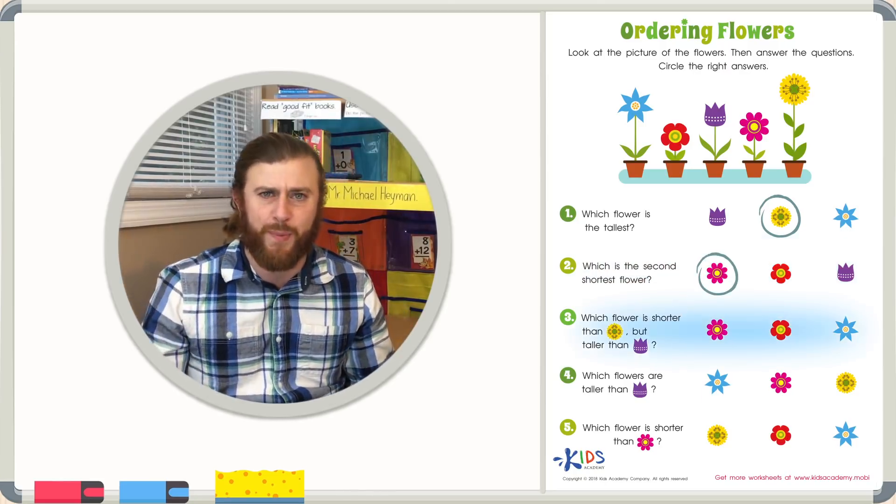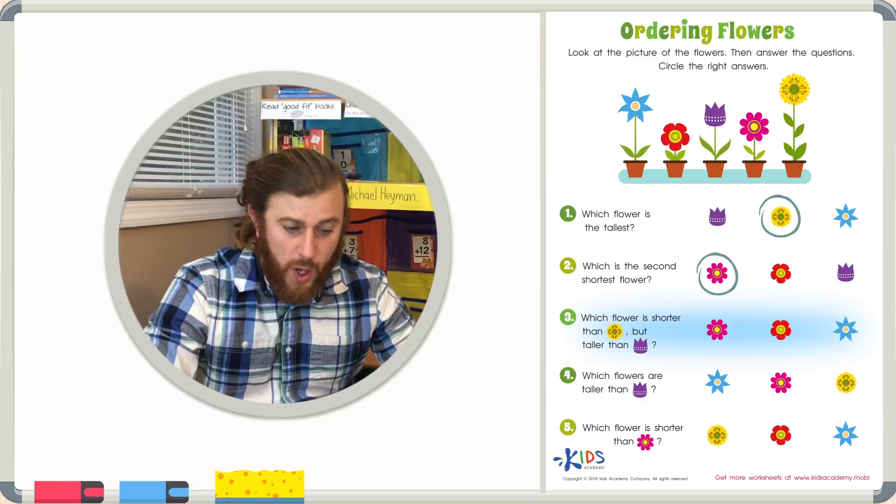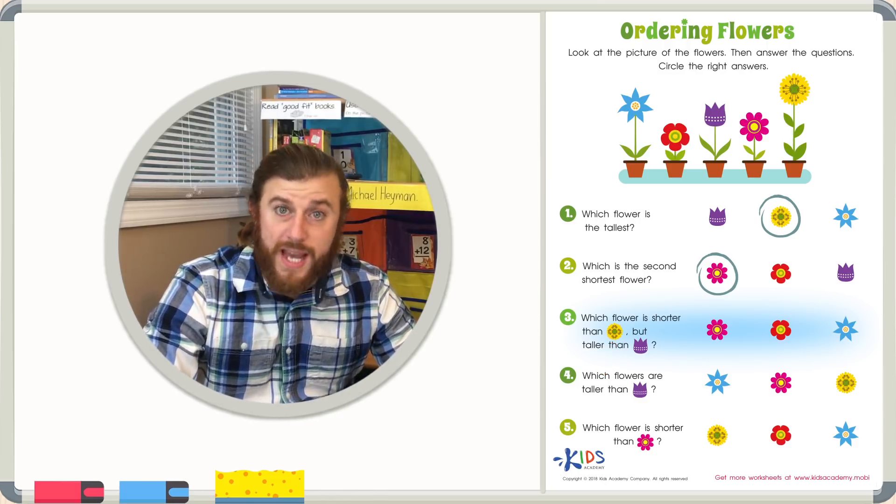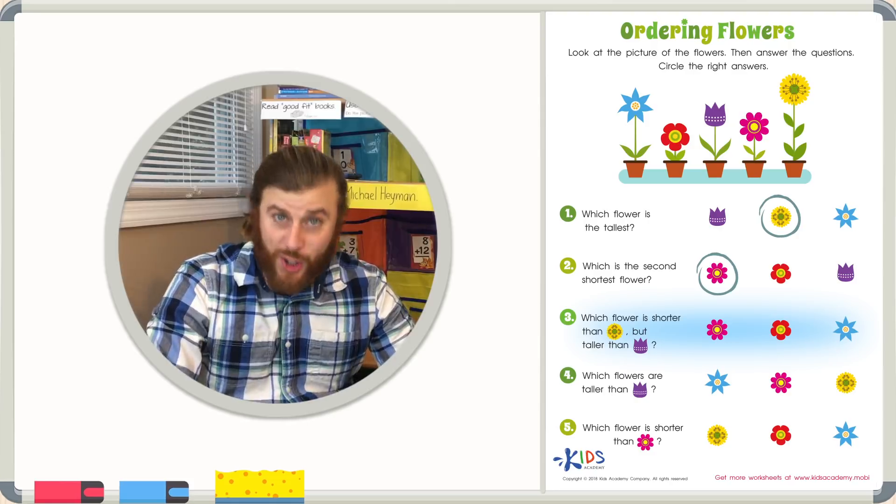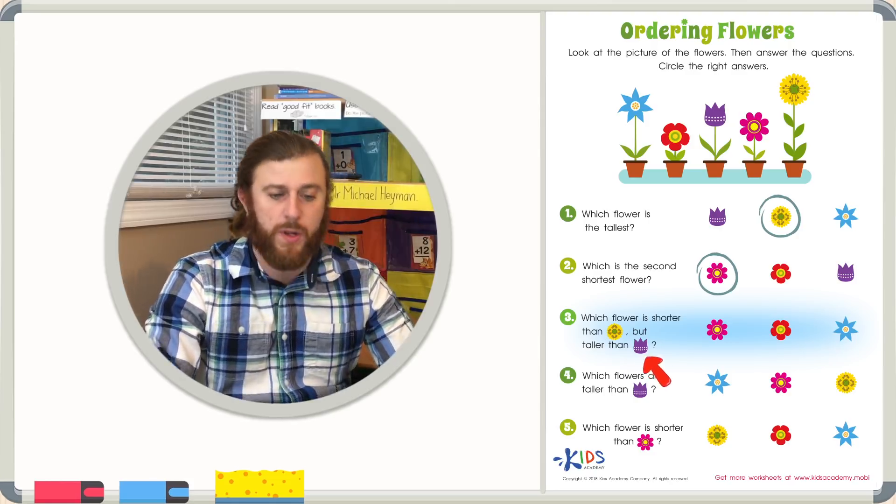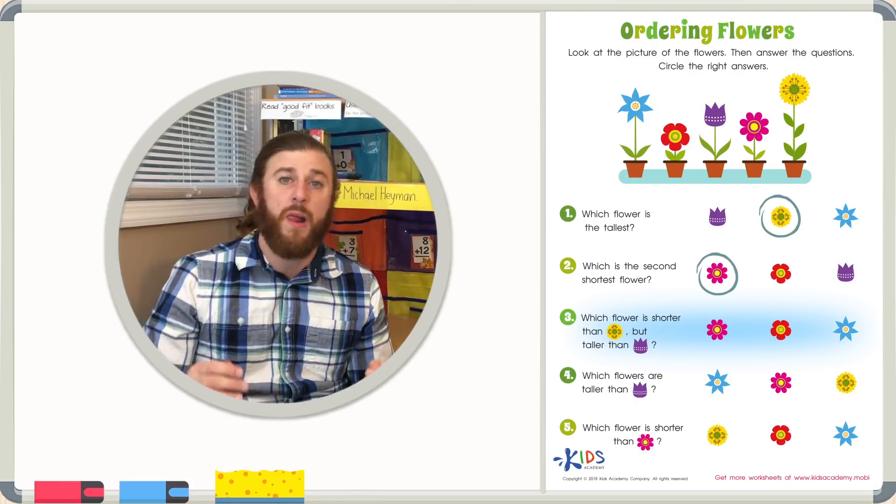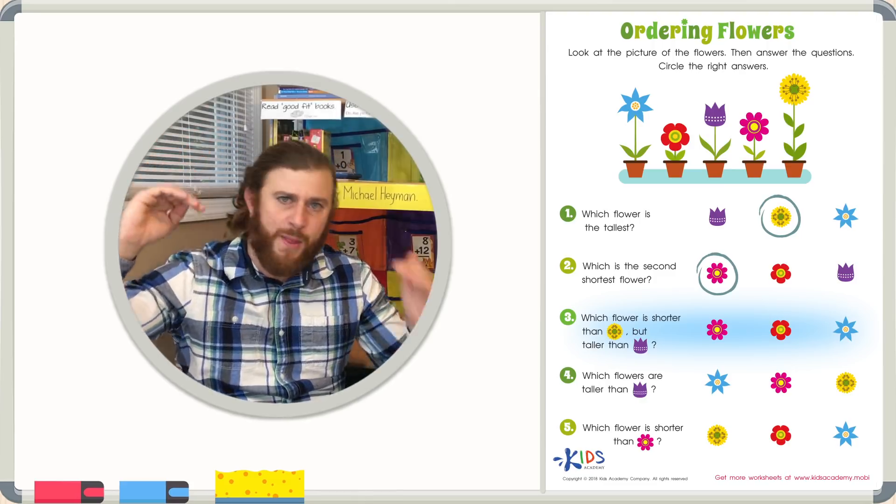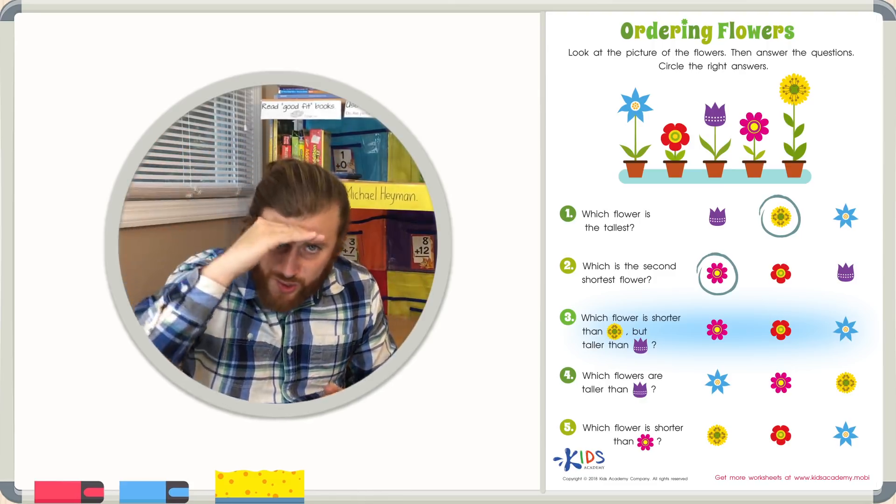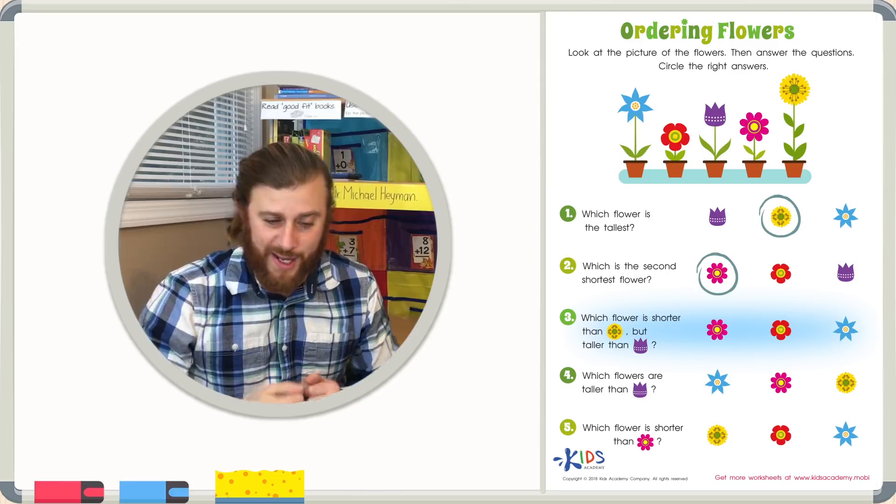Number three. Another tricky word problem. Which flower is shorter than the yellow flower, but taller than the purple flower? So we need to find a flower that's right in between the yellow flower and the purple flower. Let's look closely and see if we can find which flower that is.